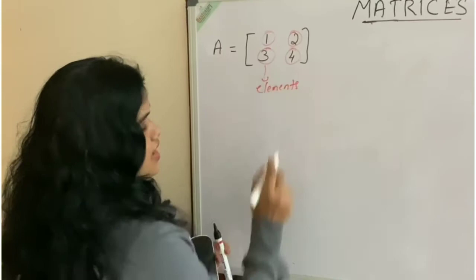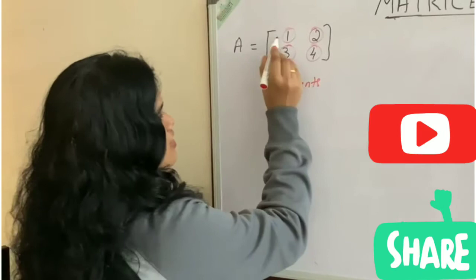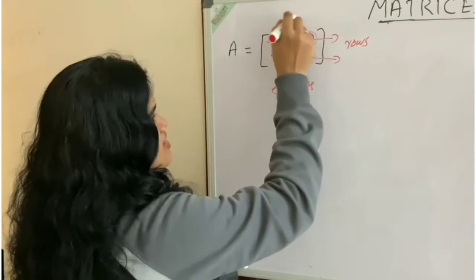So, this is a core element matrix. Then, we also have the lines known as rows, and we have the lines known as columns.